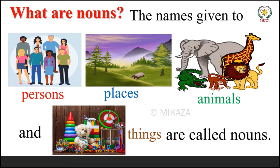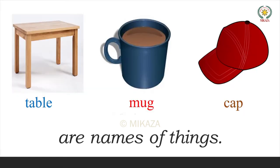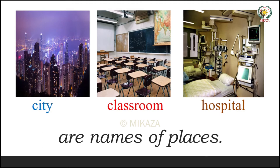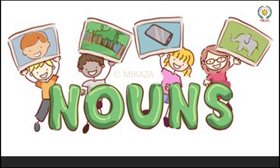Let me repeat myself. Nouns — the names given to persons, places, animals, and things. They are called nouns. Examples of names of people: the girl, the doctor, the father, and the child. Examples of names of things: table, mug, and cap. Examples of names of places: city, classroom, hospital. And names of animals: elephant, tiger, cow. So these are all nouns.